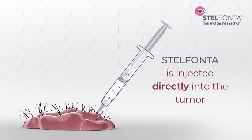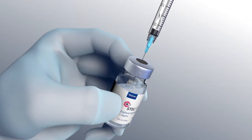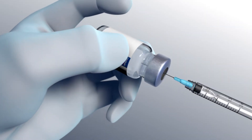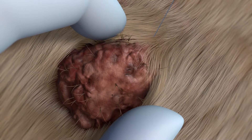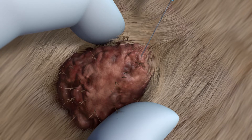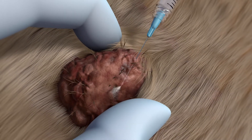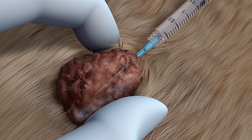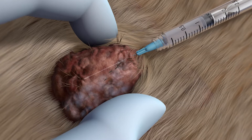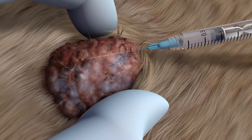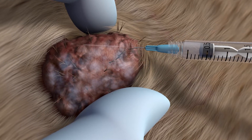Stelfonta is injected directly into the tumor. Draw the calculated volume of Stelfonta into a sterile luer-lock syringe. Insert the needle into the tumor mass through a single injection site and administer the dose evenly with a fanning technique. Take care to restrict the injection to the tumor mass only, avoiding injecting into the margins or beyond the tumor periphery. Sedation may be necessary to avoid accidental self-injection.